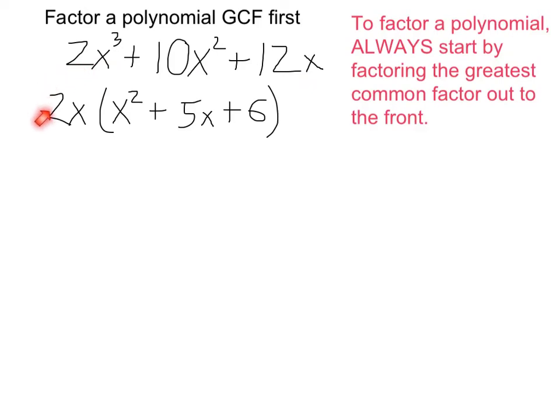So I can factor out the 2x to the front, and I'm left with all the things that would multiply by 2x in order to give me my original. Now I notice that what I have left can be factored using some conventional means that we've used to factor quadratics.